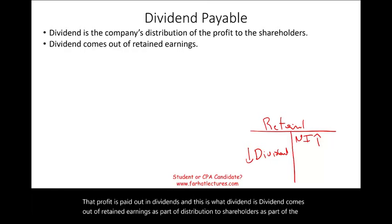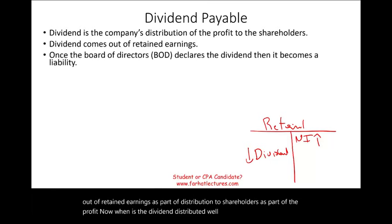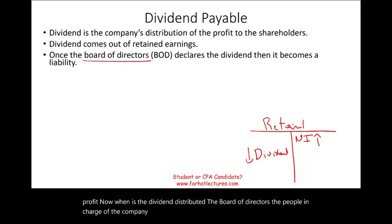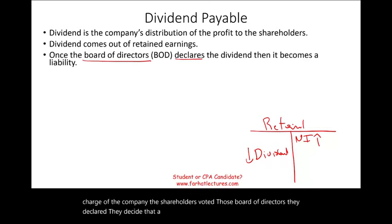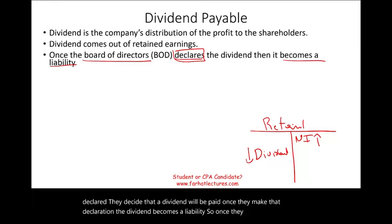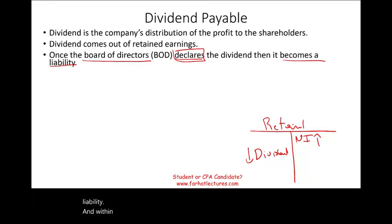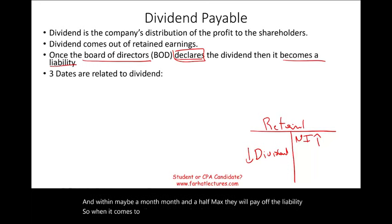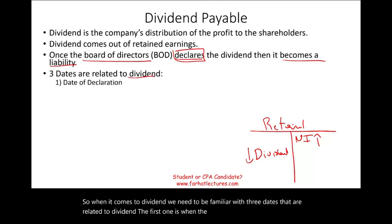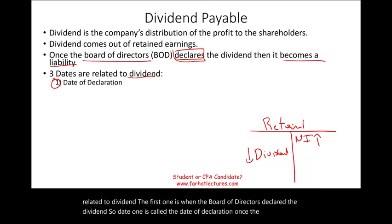When is the dividend distributed? The board of directors — the people in charge of the company, voted in by shareholders — declare that a dividend will be paid. Once they make that declaration, the dividend becomes a liability. Within maybe a month to a month and a half, they will pay off the liability. So there are three important dates related to dividends. The first is the date of declaration, when the board declares the dividend and it becomes a liability.